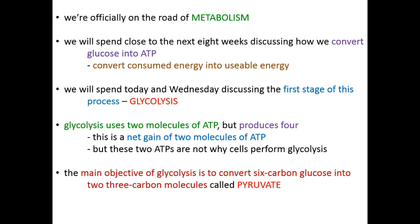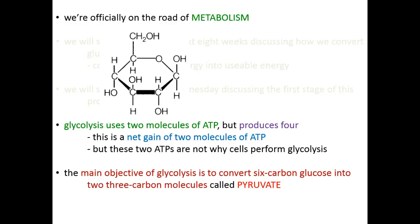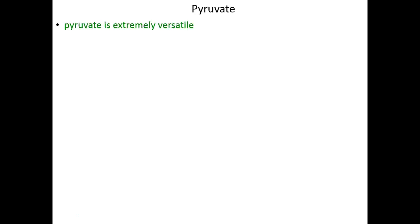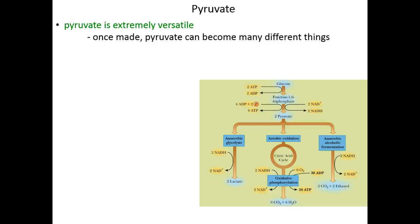The main reason we do glycolysis is to convert glucose into a molecule called pyruvate. Glucose is a six-carbon sugar, and pyruvate is made up of three carbons. We make two pyruvates for every glucose consumed — one six-carbon glucose into two three-carbon pyruvates, no carbons lost or gained. We convert pyranose glucose, the six-membered ring, into two pyruvate molecules. Cells do this because pyruvate is extremely useful and can go off and do many things.